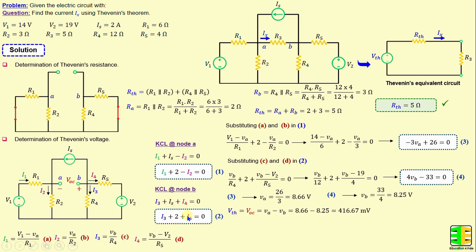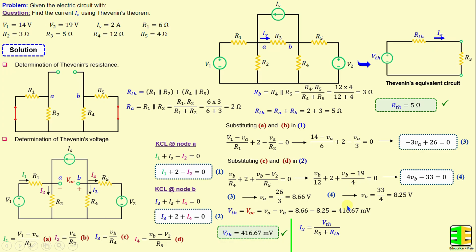VTH is equal to VOC, the open circuit voltage between terminals A and B, which equals VA minus VB. Replacing VA and VB with their numerical values, we obtain VTH equal to 416.67 millivolts. The current IX can be calculated as VTH over RTH plus R3. Replacing RTH, R3, and VTH with their numerical values, we obtain IX equal to 41.67 milliamps.